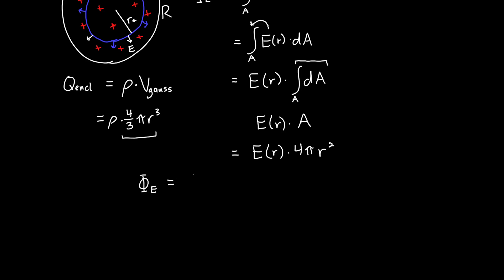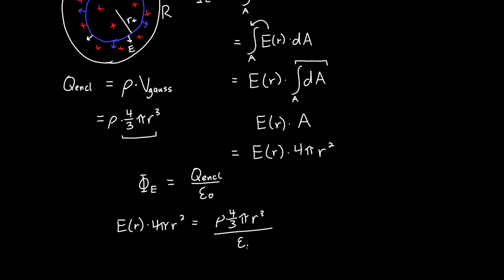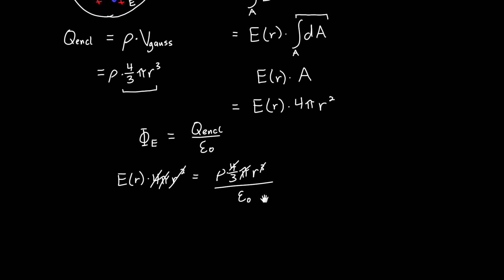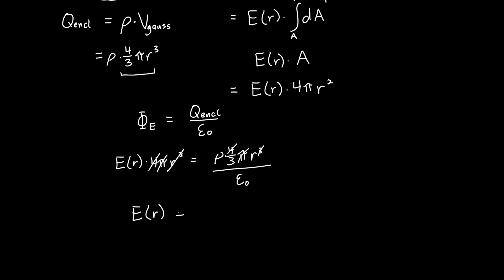Applying Gauss's Law — electric flux equals charge enclosed divided by epsilon naught — we get E(r) times 4π r squared equals rho times (4/3)π little r cubed divided by epsilon naught. The r squared cancels with one power of r cubed, and the 4 and π cancel, leaving E(r) equals rho times little r divided by 3 epsilon naught. This is valid for little r less than big R.